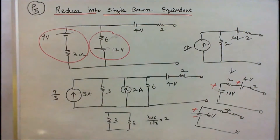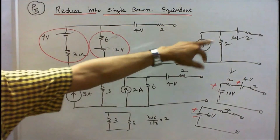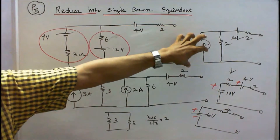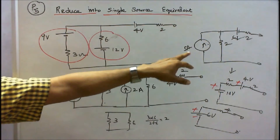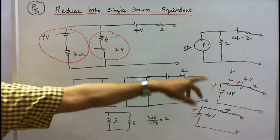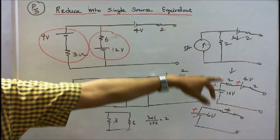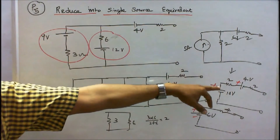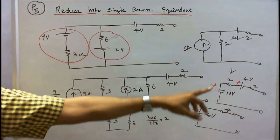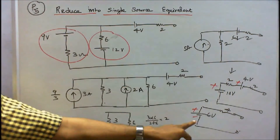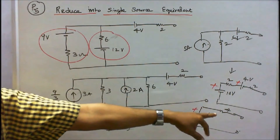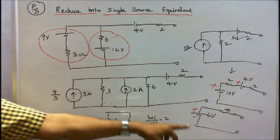Now I will convert this 5 amp current source into a voltage source: 5 into 2, that is equal to 10 volts, and the 2 ohm resistance is connected in series. This is 4 volts with 2 ohms. The total voltage is 6 volts and the resistance is 2 ohms. This is the single source equivalent.